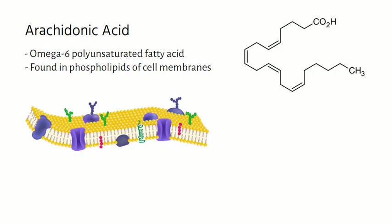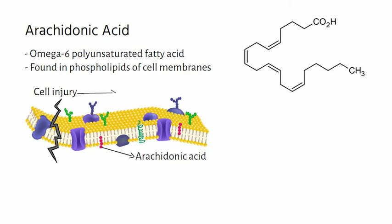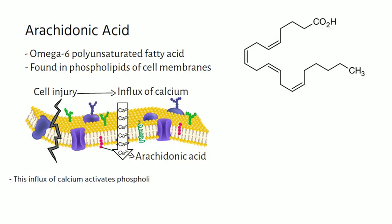Arachidonic acid is found in the cell membrane. It is released from the membrane due to cellular signaling or from cellular injury during inflammation. Cellular injury leads to a rapid influx of calcium, which activates phospholipase A2. Phospholipase A2 then frees arachidonic acid from the cell membrane.